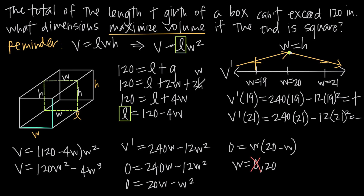Because we tested V′, the derivative of the volume function, we can say that w = 20 maximizes the volume. But with any applied optimization problem, it's very important to go back to the problem and make sure you answer the question asked. The answer is not just w = 20. In this particular question, we're asked what dimensions maximize the volume, so we need to give width, length, and height.